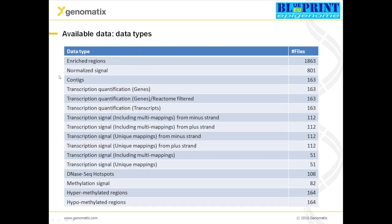The available data types include enriched regions from ChIP sequencing data, normalized signal, and context — which is merged regions from the mapped reads — and a number of different data from RNA sequencing. From the RNA sequencing experiments you also get DNase-seq hotspots — the peaks — the regions where you have DNase-seq data, methylation signal, and hyper- and hypomethylated regions.